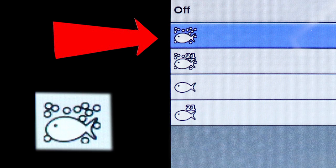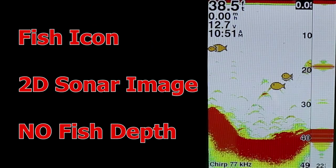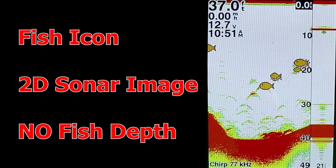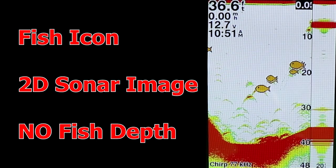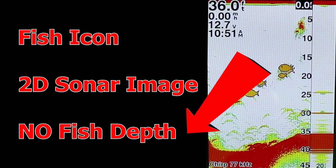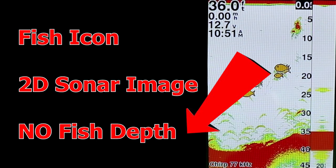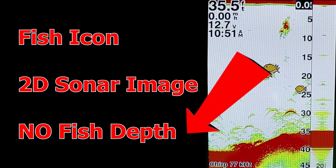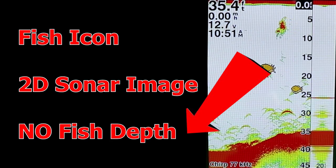Moving up one level, you'll see we have the fish icon with the bubbles around it, but there's no longer a depth indication. This is basically the same image as before — fish icon with the 2D sonar behind it — but without the added clutter of depth numbers associated with each fish.